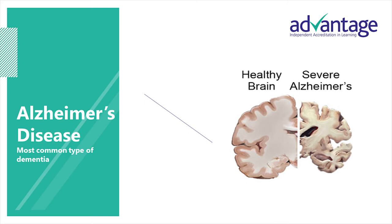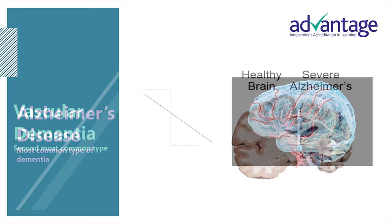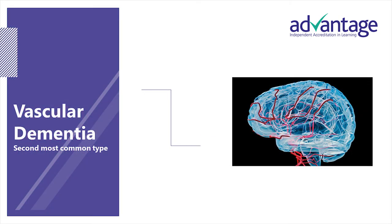On this slide you can see two cross-section slices of the brain, one healthy and one with Alzheimer's. The second most common type of dementia is vascular dementia. It is caused by problems in the supply of blood to the brain. Brain cells need a good supply. Blood carries the oxygen and glucose to the brain cells, delivered through a network of blood vessels called the vascular system. If the vascular system within the brain becomes damaged and blood cannot reach the brain cells, the cells will eventually die, and this can lead to the onset of vascular dementia.